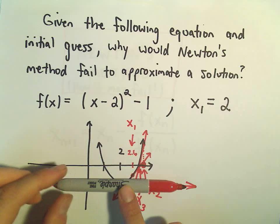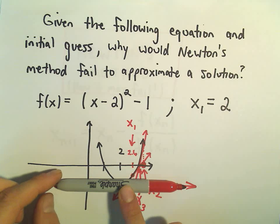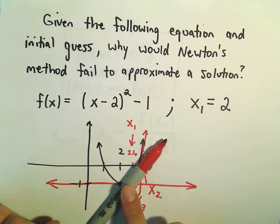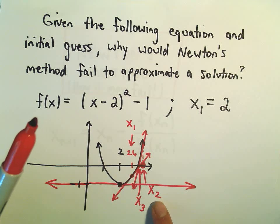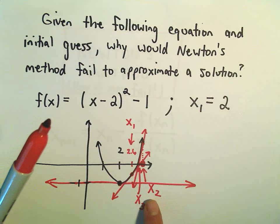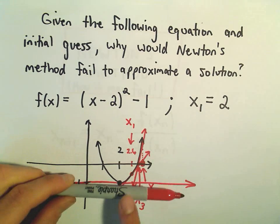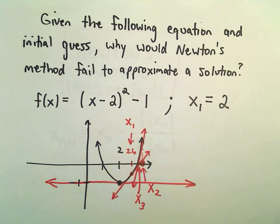If we picked it at x equals 2, unfortunately our tangent line never hits the x-axis, and that means we never get our second iteration guess. Technically we would do one iteration to get x sub 2, but we never get our new guesses because the tangent line never hits the x-axis.